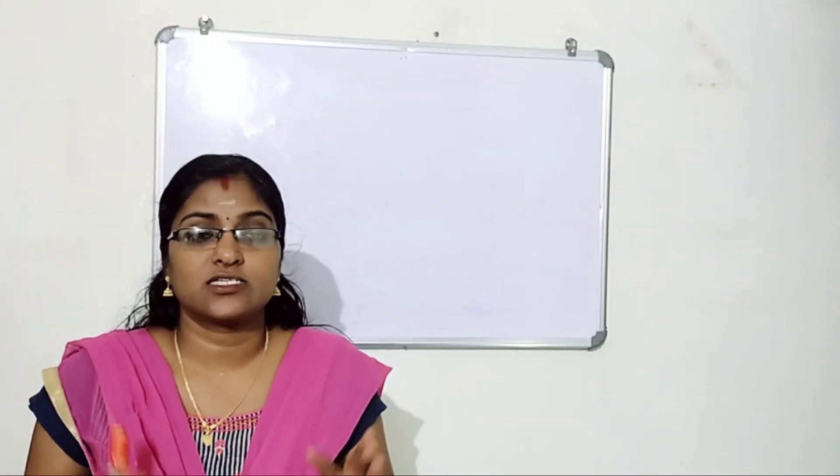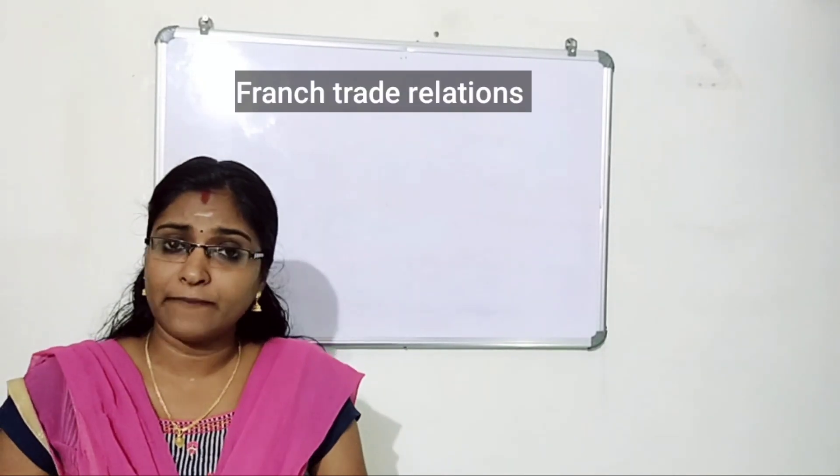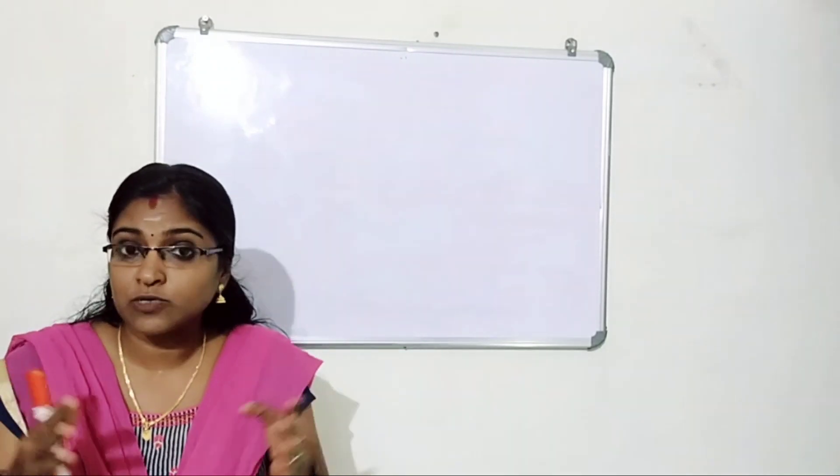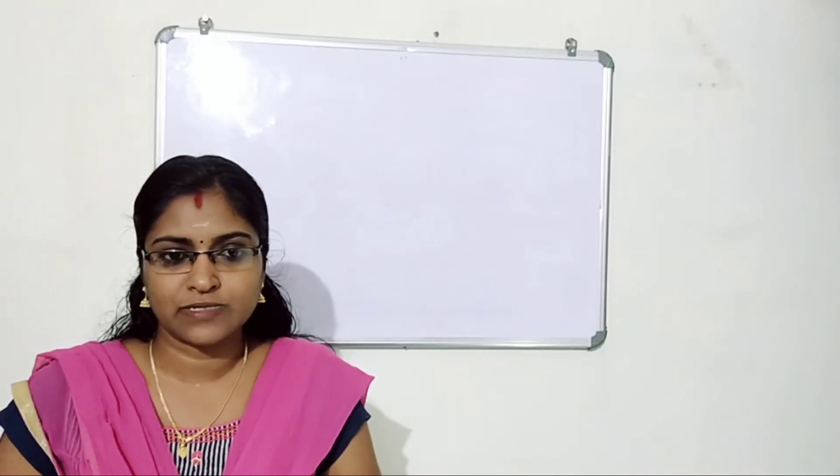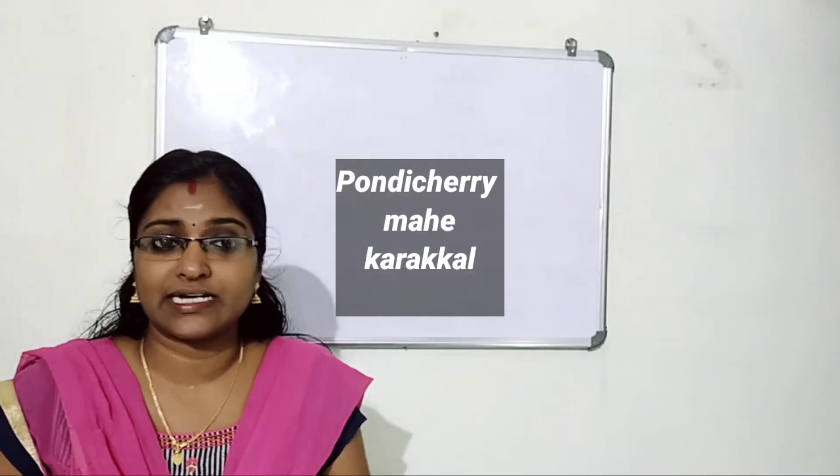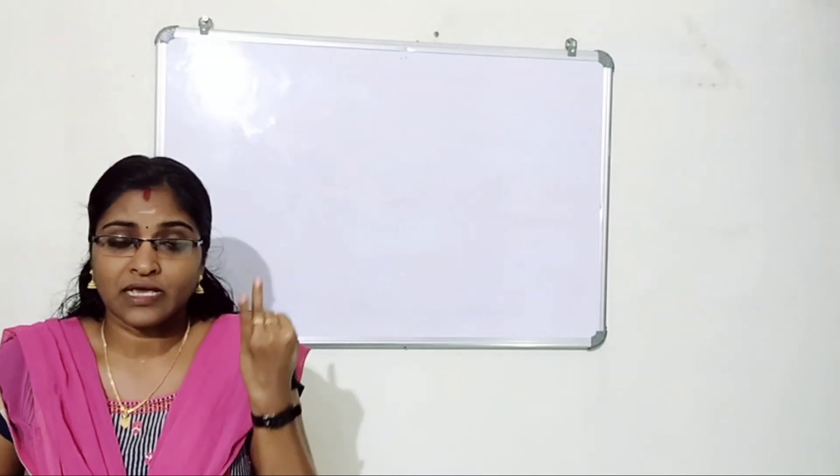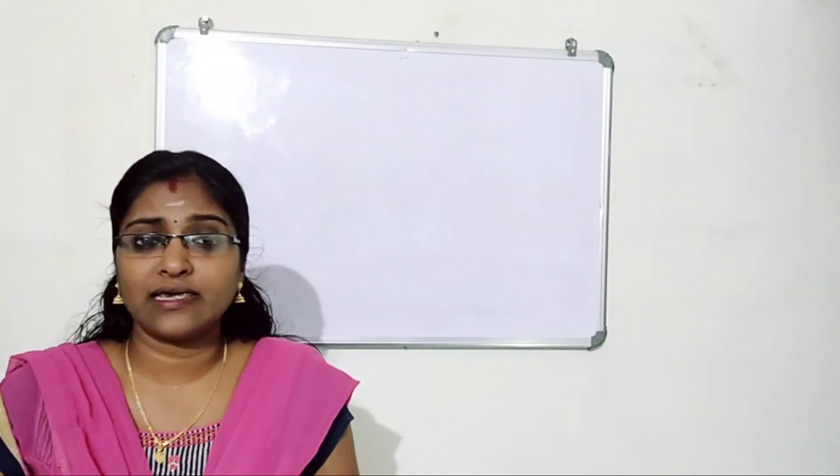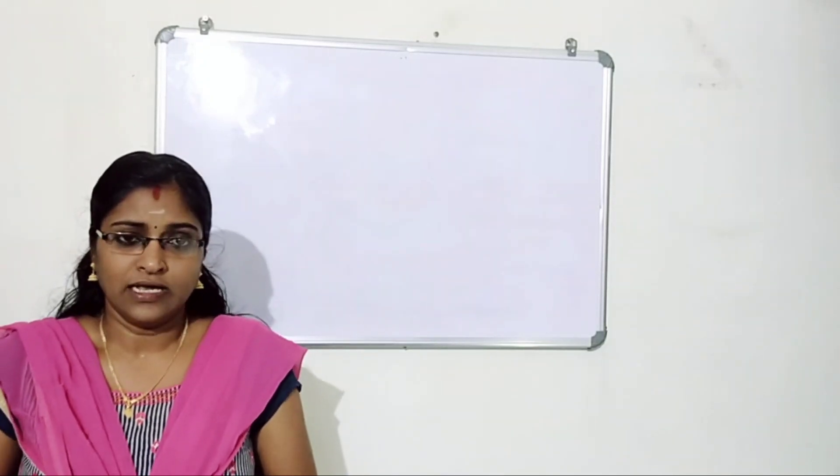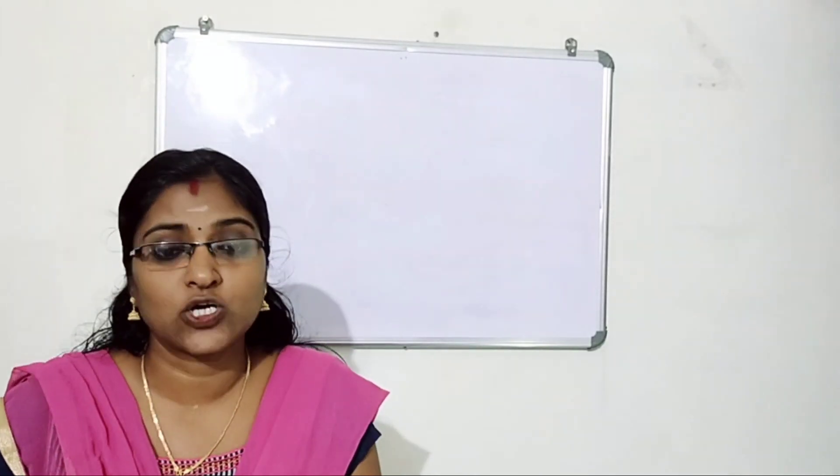Next our topic is French trade relations. French East India Company was established in 1664 and the French reached India for the purpose of trade, same purpose. Which were their major trade centers? First trade center is Pondicherry, now known as Puducherry. Then Mahe and Karaikal were the major trade centers of French in our country. Pondicherry was their headquarters.